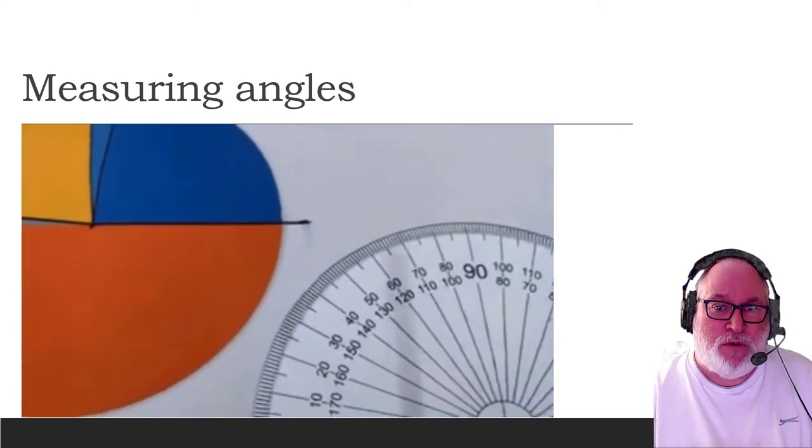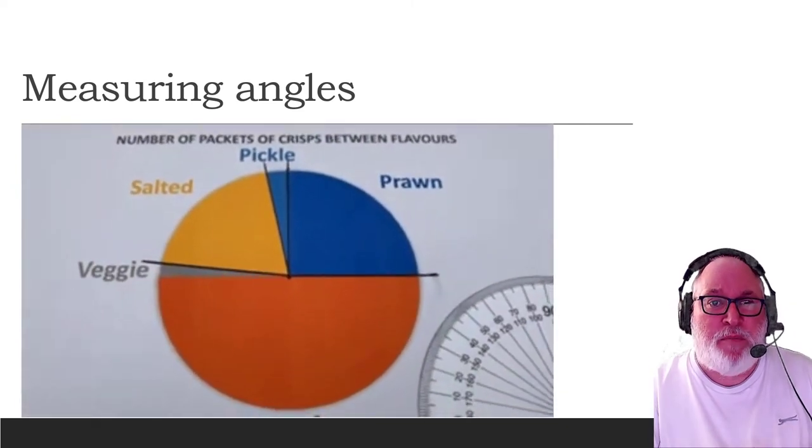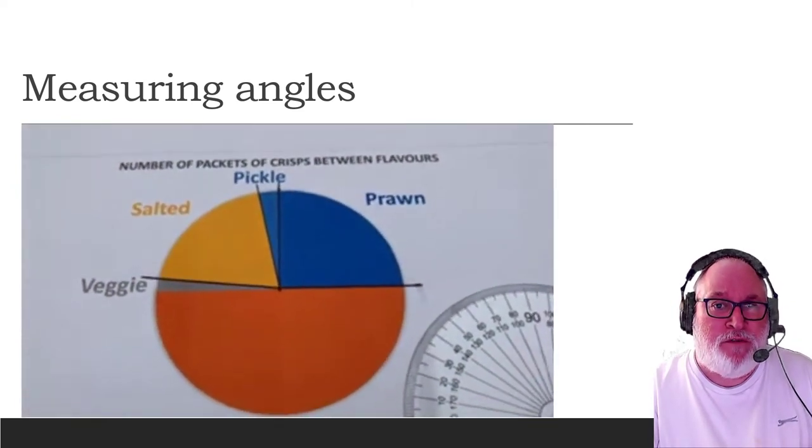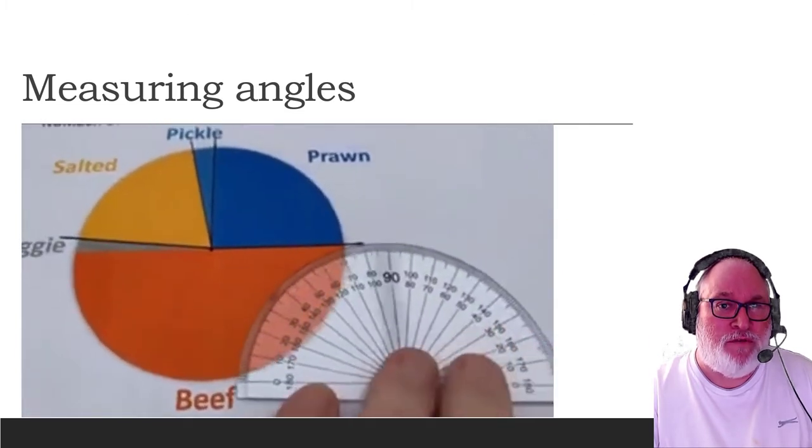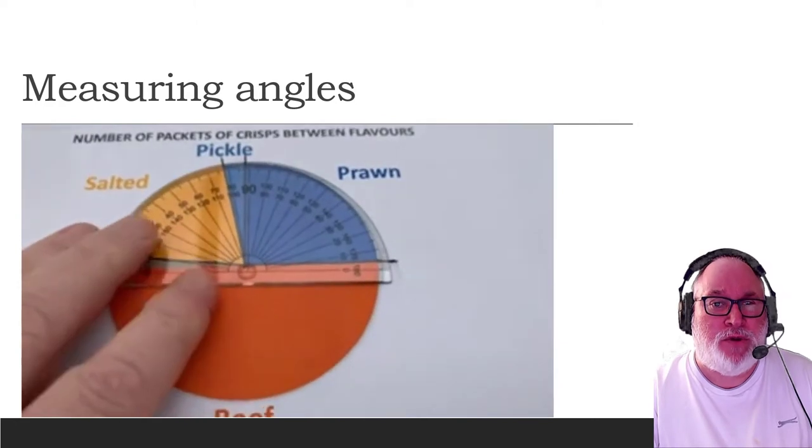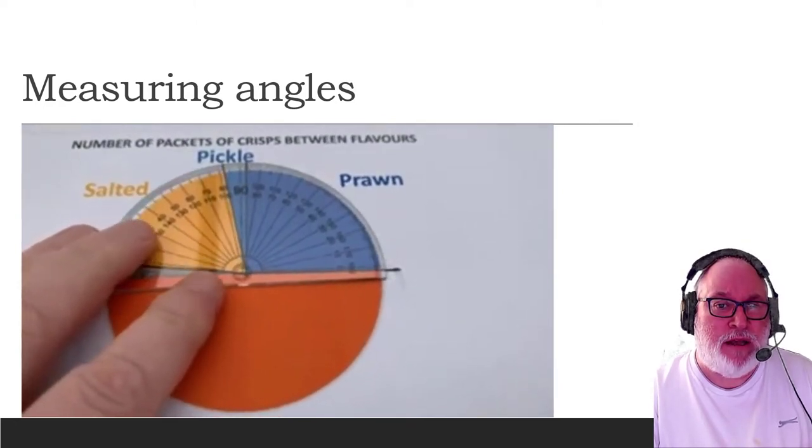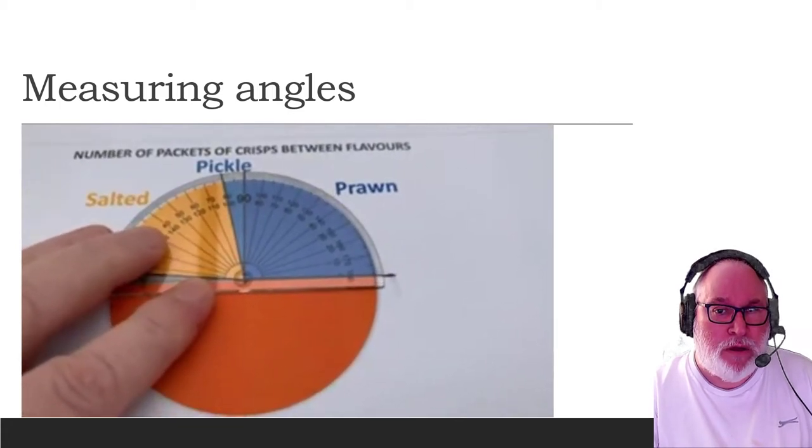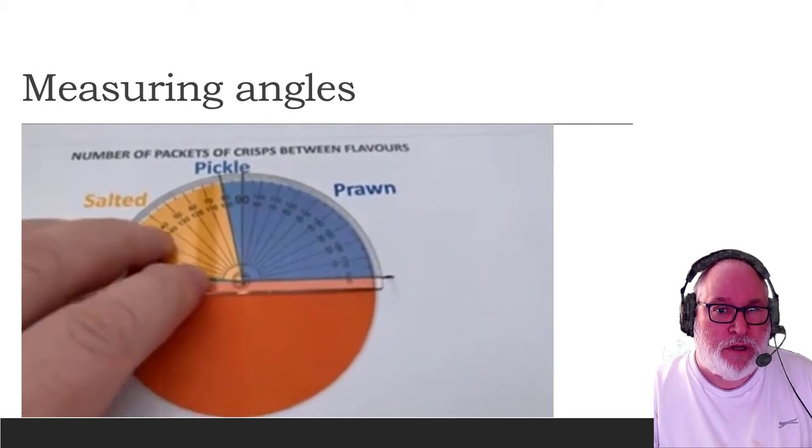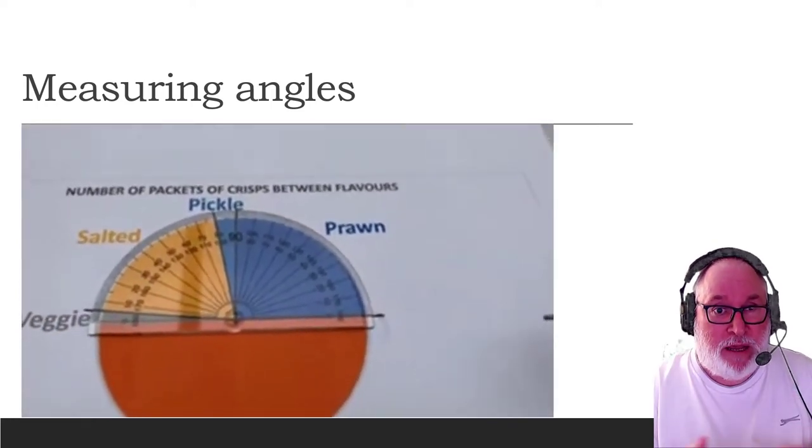If we have a pie chart that's been provided to us and we work out the degrees. Now this has the degrees written on it, but if it didn't, then we could still work out from that pie chart. What I want to do is show you how we can actually measure using a protractor. As I said, we've got 0, 180 at one end and 0, 180 at the other. And here we have a pie chart.